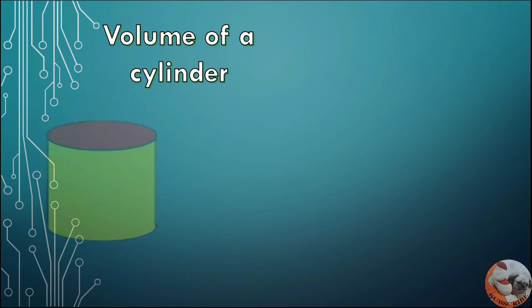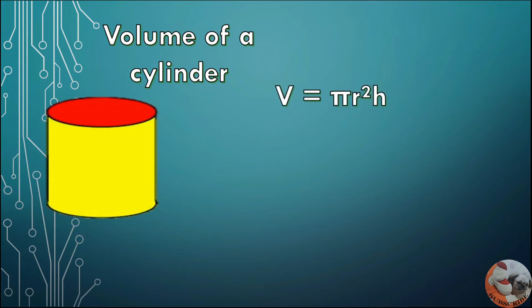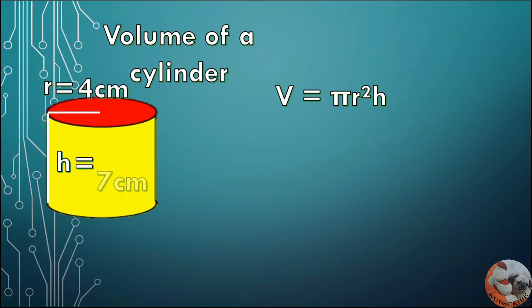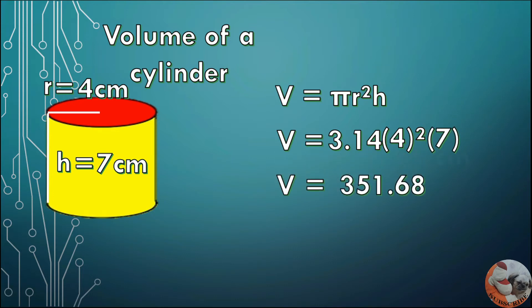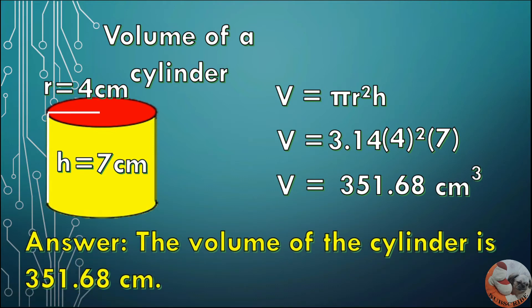Let's have an example. We have a cylinder. The formula for getting the volume of a cylinder is V = πr²h. Given radius = 4 cm and height = 7 cm. V = 3.14 × 4² × 7. V = 351.68 cm³.